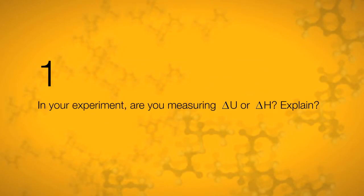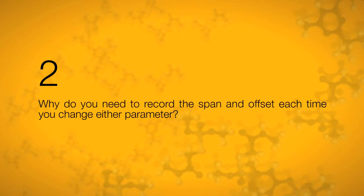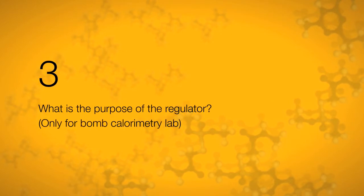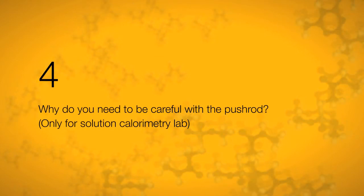In your experiment, are you measuring delta U or delta H? Explain. Why do you need to record both the span and offset each time you change either parameter? What is the purpose of the regulator? Why do you need to be careful with the pushrod?